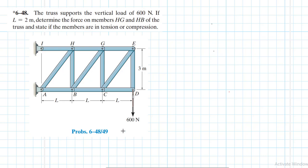Welcome. The problem reads: a truss supports a vertical load of 600 Newtons. If L equals 2 meters, determine the force on members HG and HB over the truss. This problem is from the Mechanics Statics textbook, 13th edition by RC Hibbeler. We've been asked to find members HG and HB.